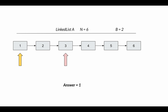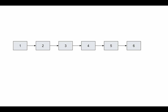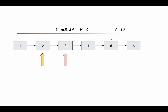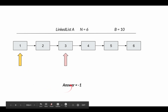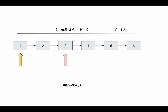Now let's talk about a scenario where the answer would be minus one. If the value of B is 10, you have to find the 10th node from the center towards the beginning. The center is 3, but traversing towards the beginning you only have 2 more nodes — the 10th doesn't exist. So the answer is minus one, because it's out of scope of the linked list.